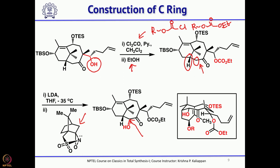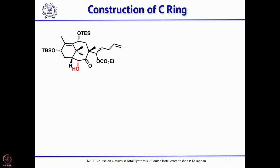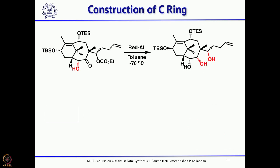Davis oxazoridine is used to selectively introduce a hydroxyl group and introduce chirality at the required carbon. Looking at this conformation, the 8-membered ring has a boat-chair conformation. Because of this boat-chair conformation, any attack on the carbonyl group should take place from the front side, giving an alpha hydroxyl group. This boat-chair conformation was cleverly used for further steps. Treating with Redal, the hydride comes from the front side, so you get alpha alcohol.